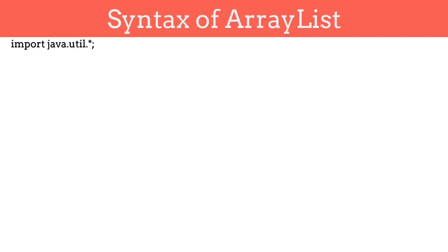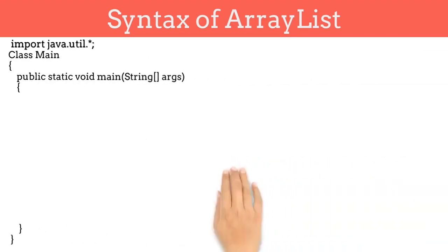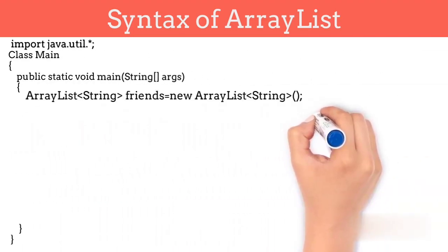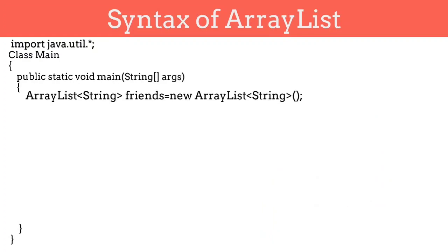After that, we have to create an ArrayList in our main method. Its syntax is: keyword ArrayList, then in angular brackets we have to define the type of ArrayList. If we want to store strings, then we will define the type as String. After it, the name of ArrayList — we will keep the name of our ArrayList as 'friends' — then equal-to operator, new keyword, the class name ArrayList, then again the type in angular brackets, and then open and close brackets. This is the normal syntax we use to create an object of a class: first class name, then object name, then equal-to operator, and then constructor.